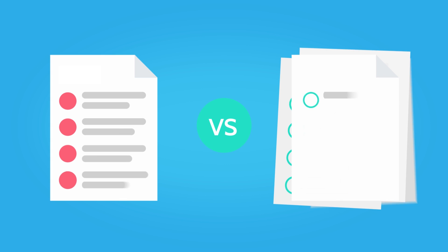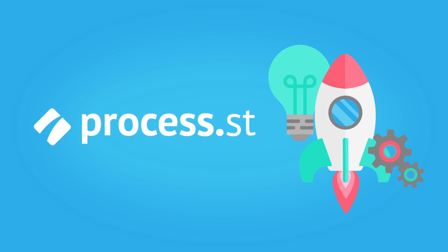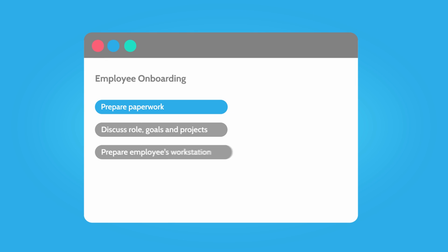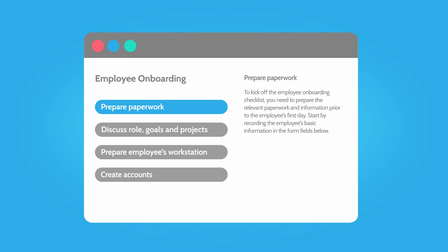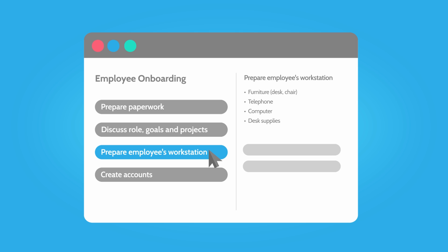The difference between templates and checklists is an important concept when getting started with ProcessStreet. First, you have a process template, which is a set of instructions on how to complete tasks, like a blueprint. Templates lay out exactly how a process is supposed to be completed.